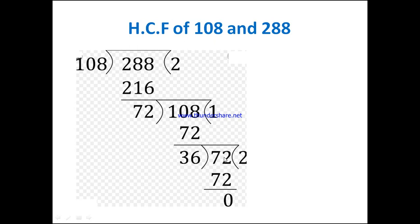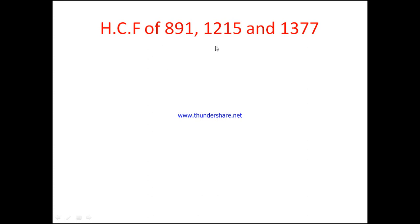Then 72 becomes the dividend. In 72, how many times does 36 go? Two times — 2 times 36 is 72. When we subtract we get remainder 0. So the HCF of 108 and 288 is 36, the last divisor. Likewise, we can find the HCF of 3 or 4 numbers as well.